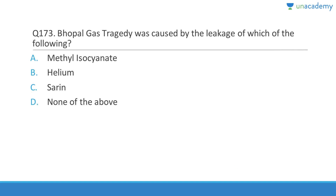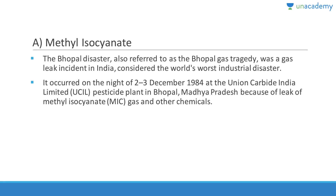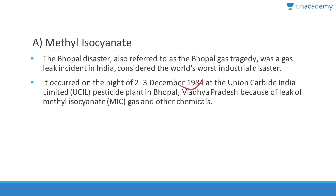The Bhopal gas tragedy was caused by the leak of methyl isocyanate (MIC) gas. It occurred on 3rd December 1984 at Union Carbide India Limited, a pesticide plant in Bhopal. It is considered the world's worst industrial disaster.